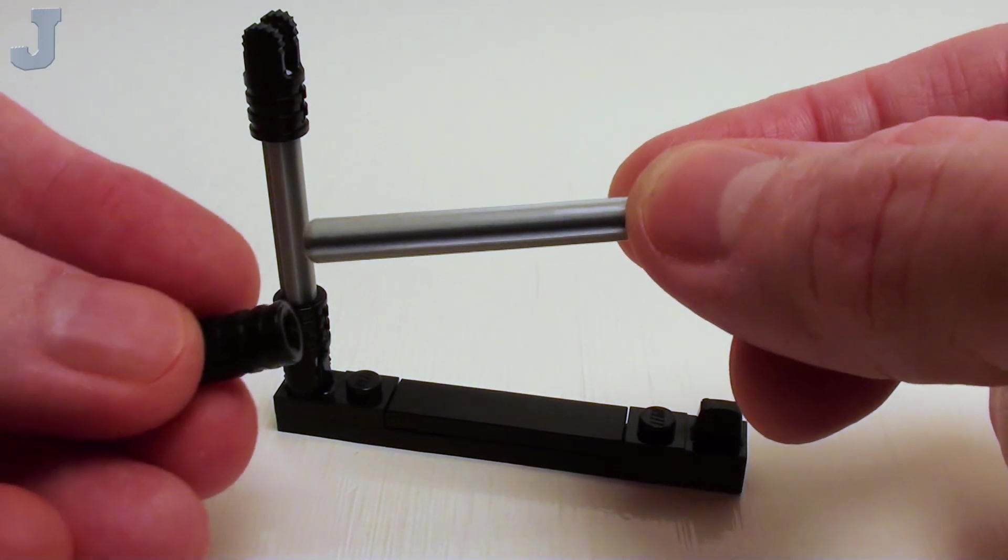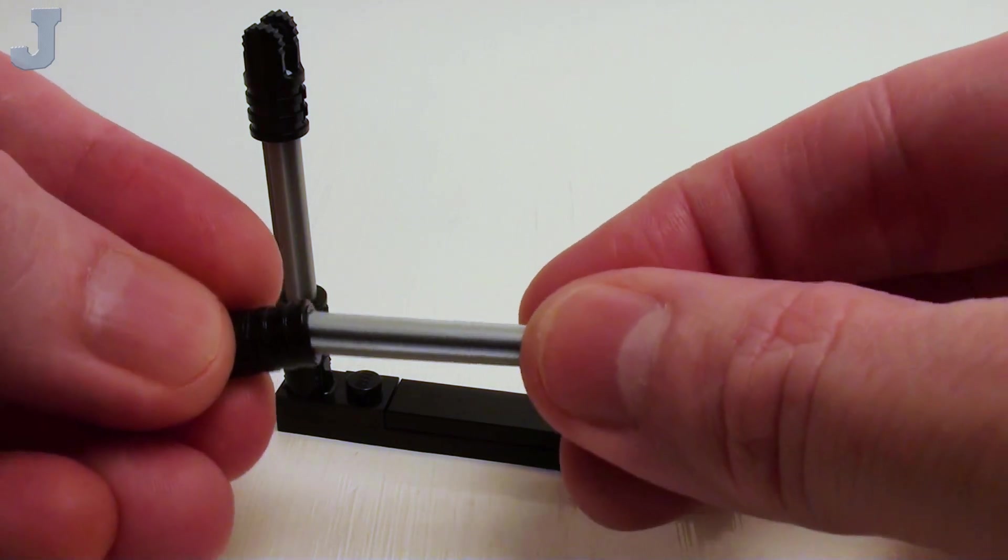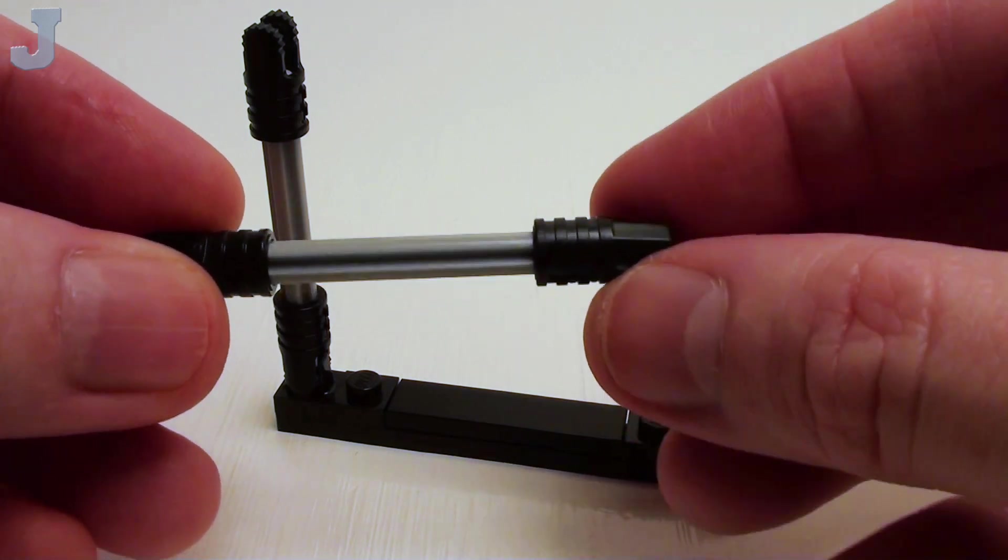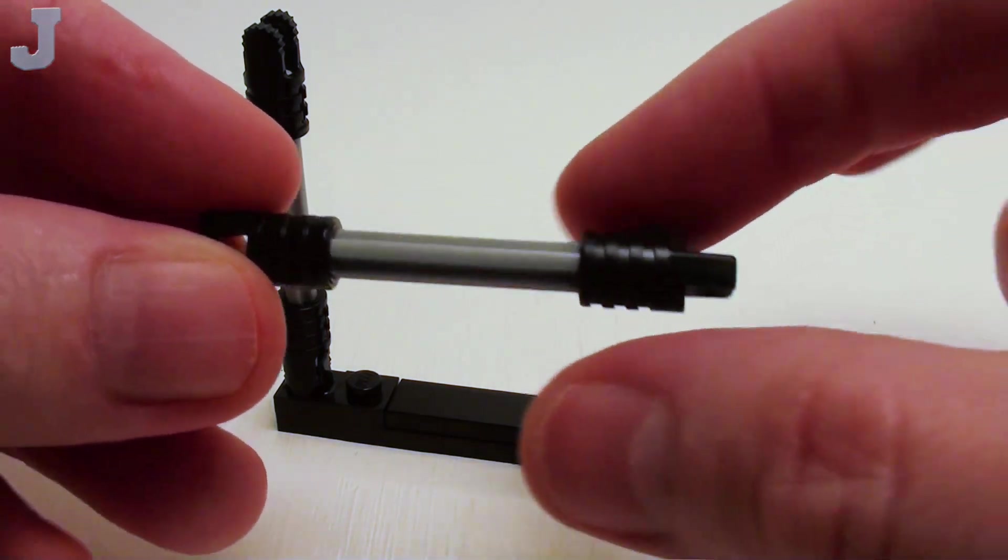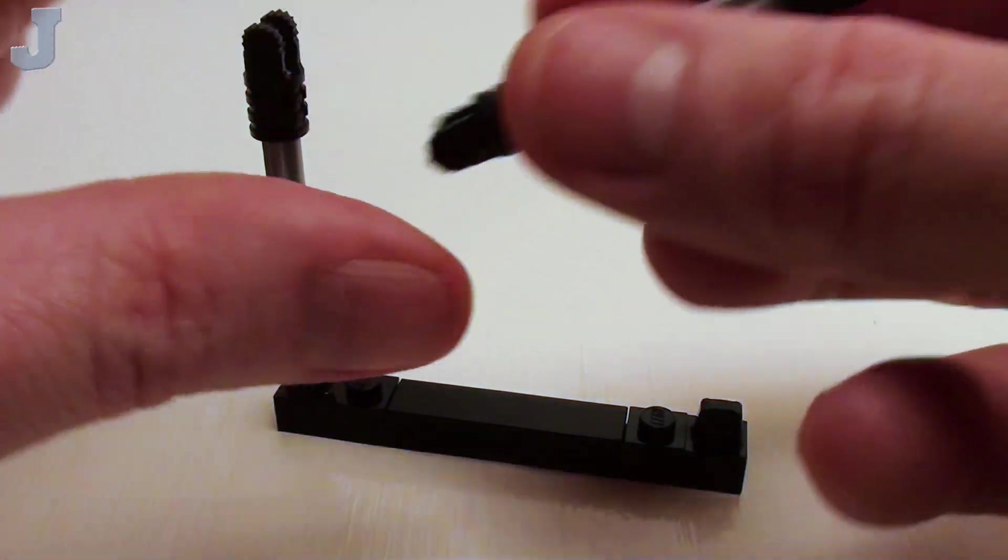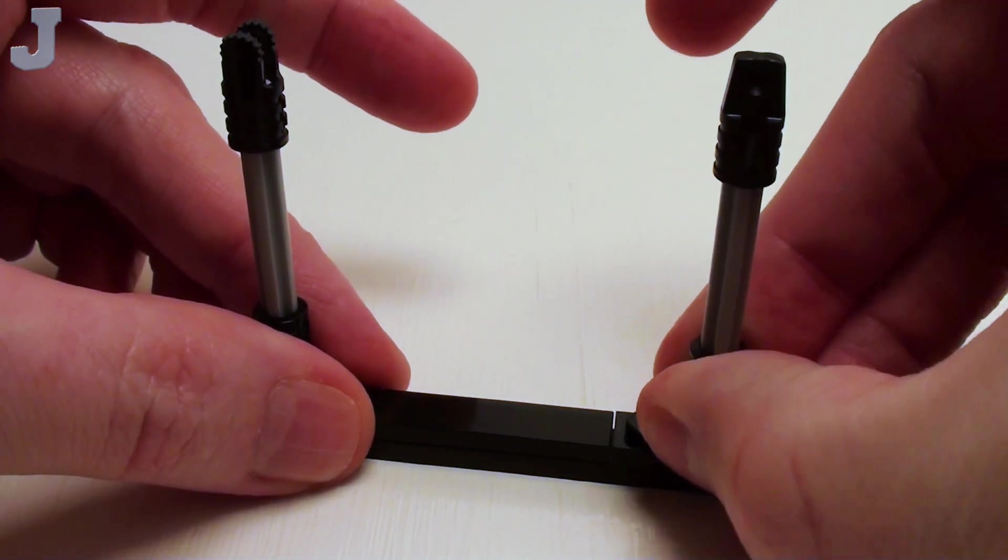Take another 5-stud long cross axle and another friction fork. Place this on one end. And on the other end, a friction stub with cross hole where the friction stub and the friction fork are facing in the same direction. We're going to place this one right here.